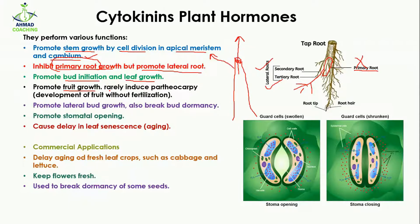Cytokinin rarely induces parthenocarpy. Parthenocarpy is the development of fruit without fertilization — meaning the male and female gametes do not need to fuse to form a seed. In parthenocarpy, fruit growth takes place without the formation of a seed.